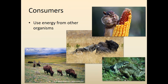Then we have consumers — organisms using energy from other organisms. Think about these bison: they're eating grass, taking energy from producers. This chipmunk is consuming corn, again from producers. But then you have higher-level consumers — predators. This wolf is going to eat this bison, and that wolf is again a consumer, just a higher-level consumer.